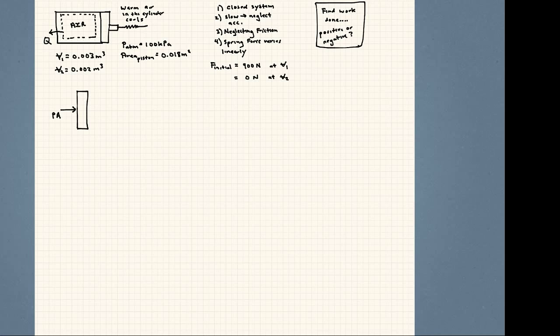What we want to find from this problem is the work done. Is it done to the system? Is it taken out of the system? Is it positive or negative? Some assumptions we're making: the system is a closed system, the piston is moving very slowly during this process so we're going to neglect acceleration, we're also neglecting any frictional forces, and we're assuming that the spring force varies linearly.